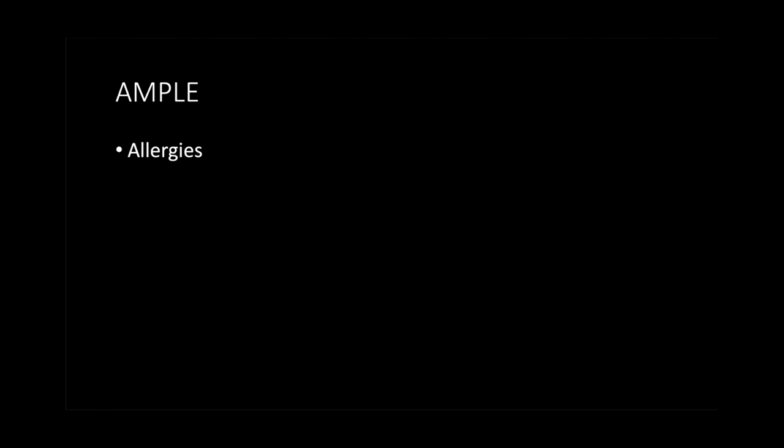AMPLE has five key elements. A is Allergies — what are they allergic to, medication, food, etc. M is Medication — what medication are they taking, and that has to include both over-the-counter and prescription. You always have to ask about both. Don't forget about herbal remedies, because some people take garlic, zinc, or multivitamins, some of which can interfere or interact with medication, so it's good to be aware of that.